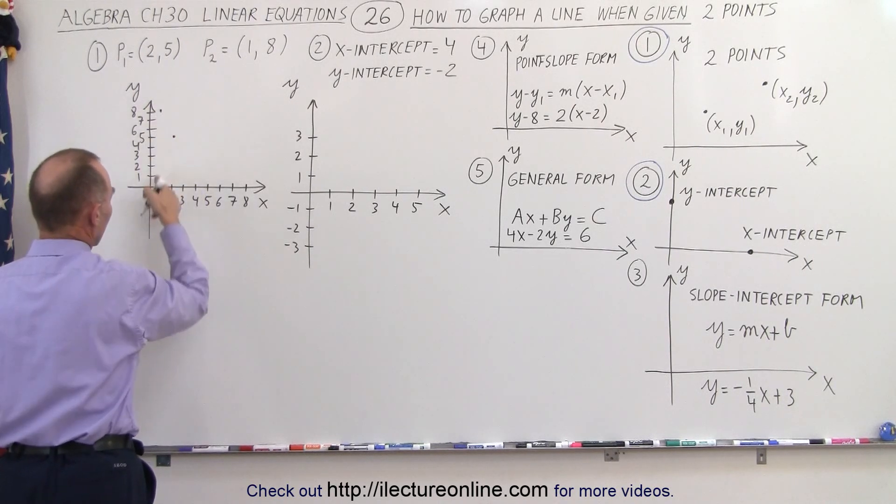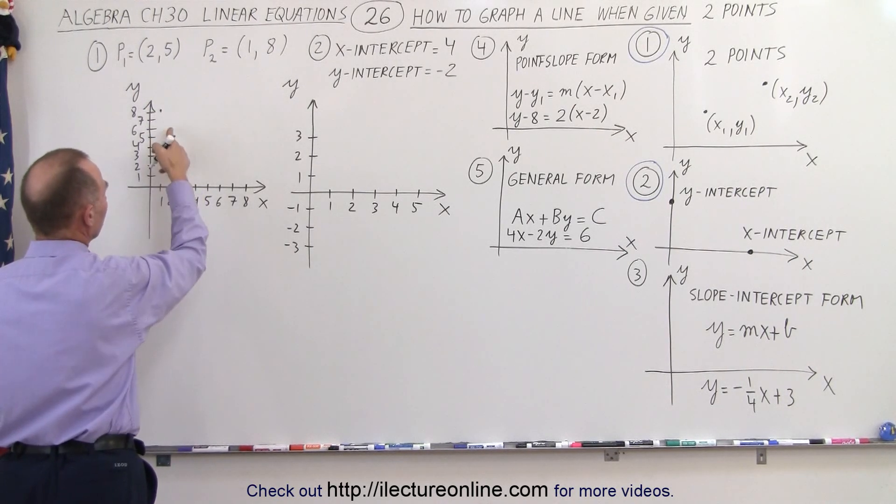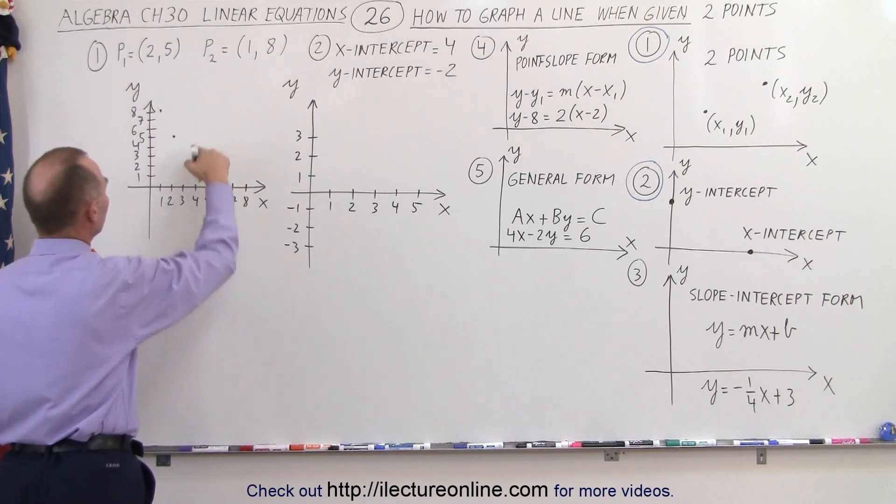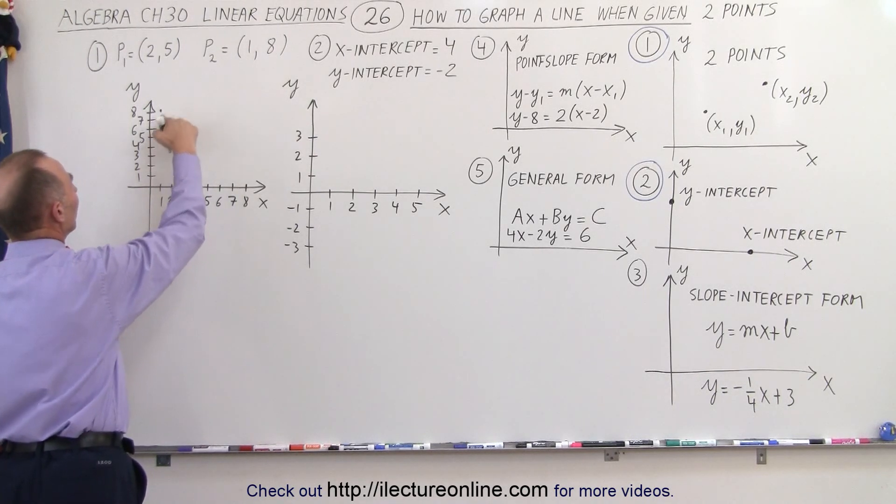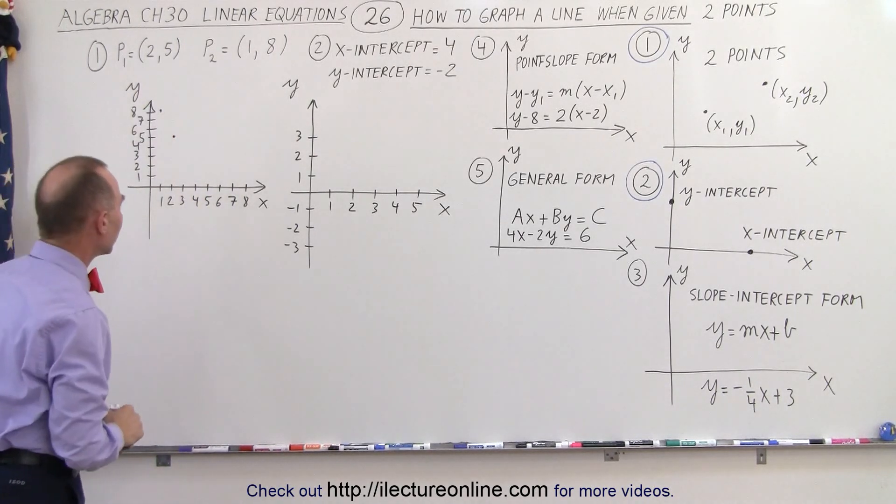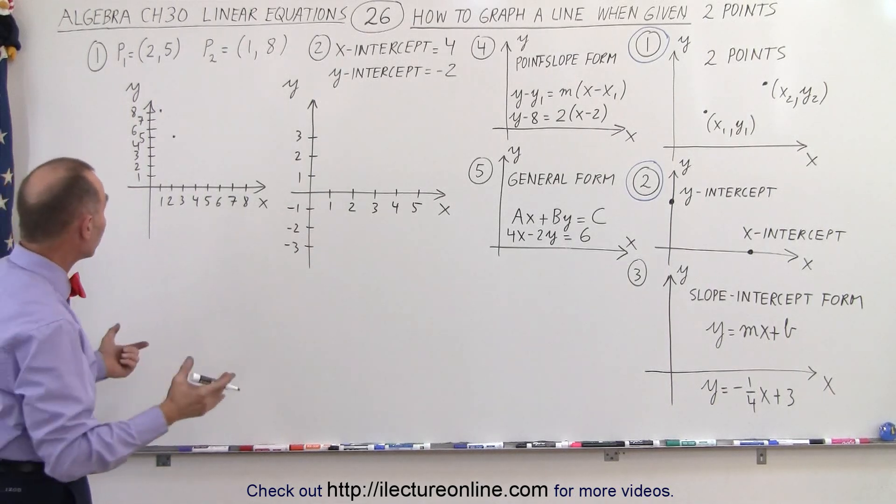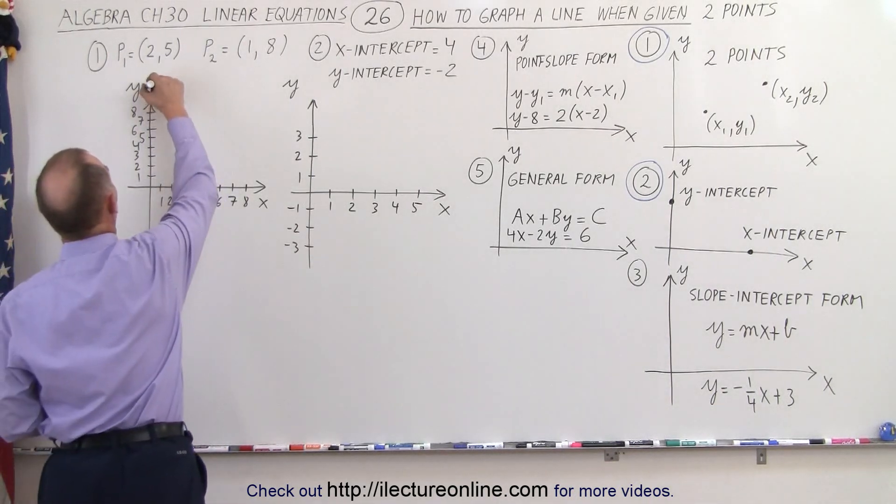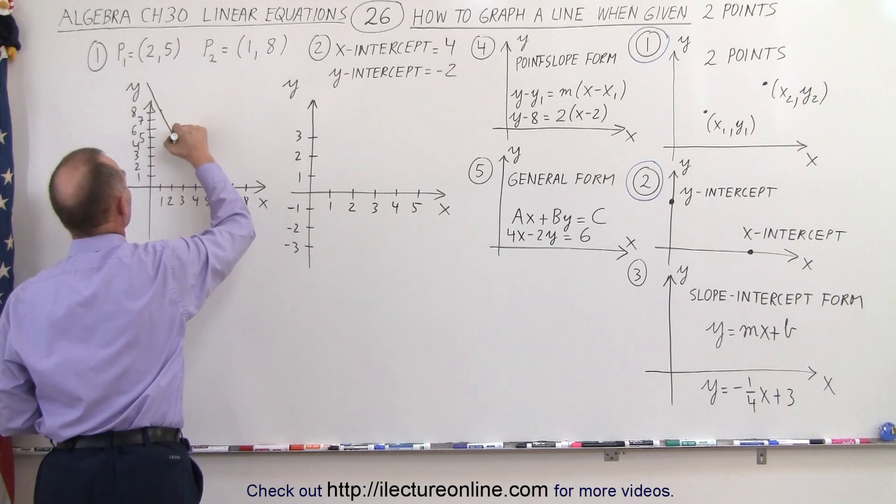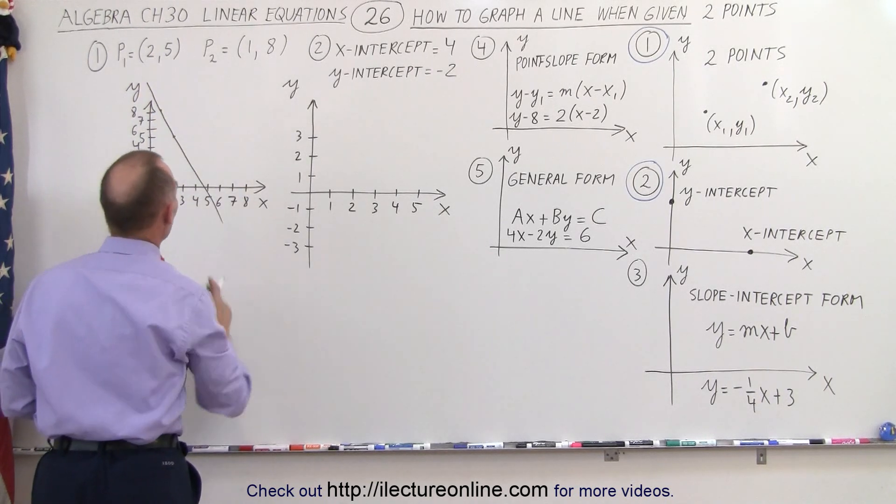So notice, if we go straight down, we hit the x-axis at x equals 1. Here we hit the x-axis at x equals 2, the y-axis at y equals 5, and the y-axis at y equals 8. So now all we need to do is connect those two points, and we have the line that contains those two.